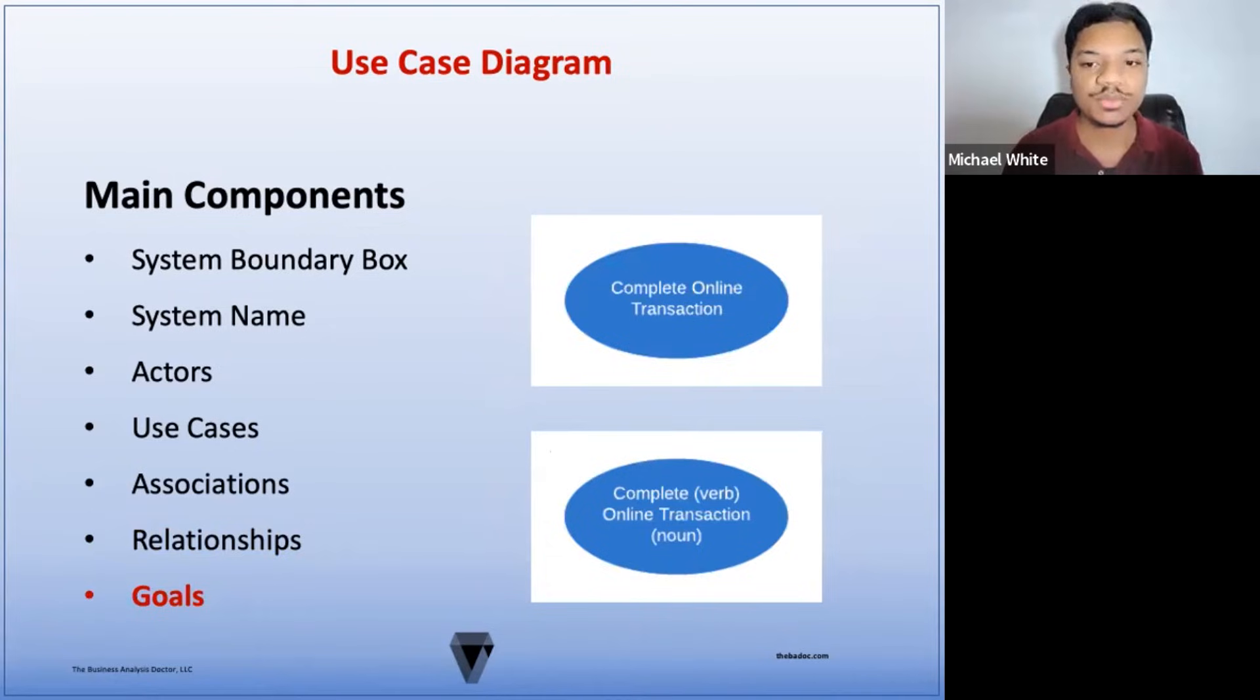Now, let's look at goals. The goal is the end result of key use cases. Various scenarios may occur within a use case, but the goals are represented through the naming convention of the use case in a verb-noun format. For example, complete is your verb and online transaction is your noun. So the goal here is to fully execute or complete the online transaction. A general rule when determining which use cases to use in a use case diagram is to identify the requirements that enable the user to achieve a particular goal.